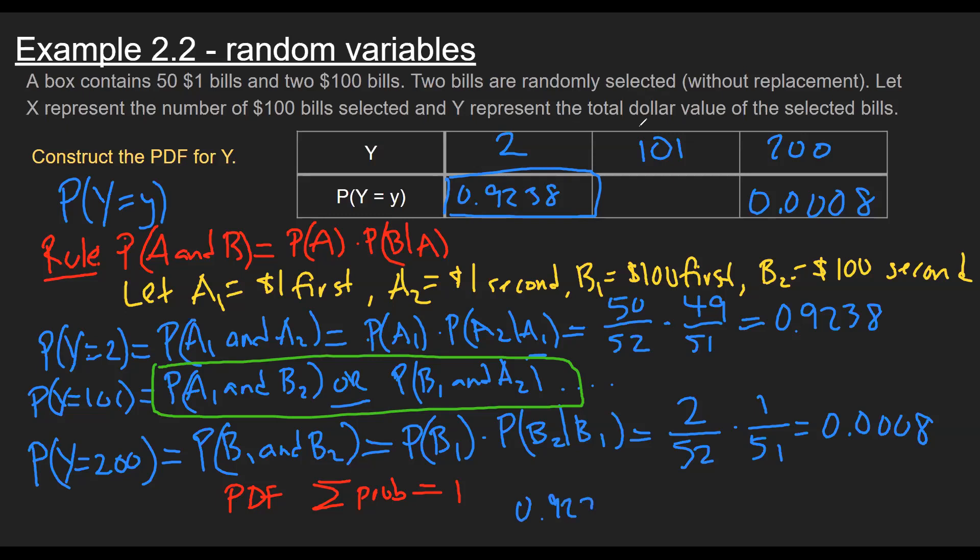from the chance I pull two 1s plus this chance here of getting 101. And the last one we figured out, 0.0008, and that equals 1. So if you run through the arithmetic there, final probability is 0.0754, and this represents our PDF.